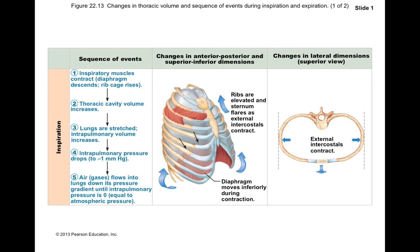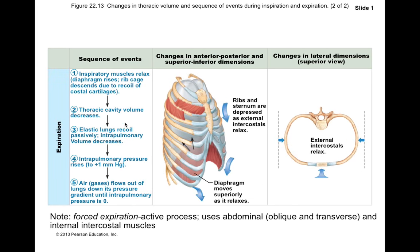During exhalation, the thoracic cage recoils back to a resting shape. Quiet exhalation or expiration does not require muscle contraction — the ribs and the diaphragm muscle are elastic enough to relax back to a resting shape without any muscle contraction. So normal exhalation is a passive process, unless you forcibly exhale.